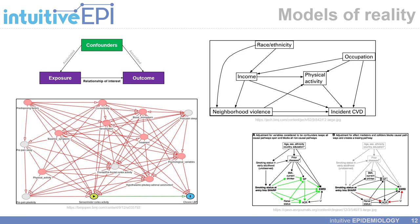In terms of epidemiology, we also have models of reality, which can be very simple — we have our exposure, our outcome, and confounding factors associated with both that may introduce bias. But we could also draw much more complex diagrams, also known as directed acyclic graphs, that allow us to see the potential relationships between our exposures and our outcome, and all the potential backdoor paths or confounding variables that we may have to consider.